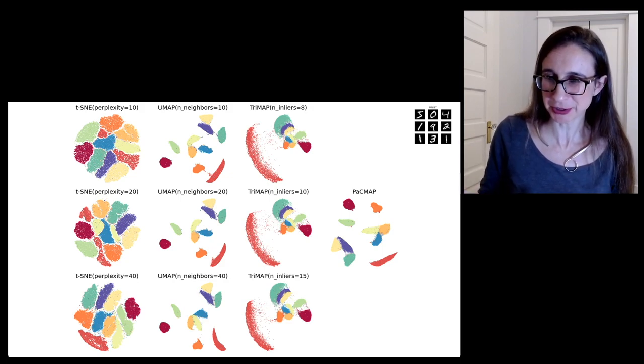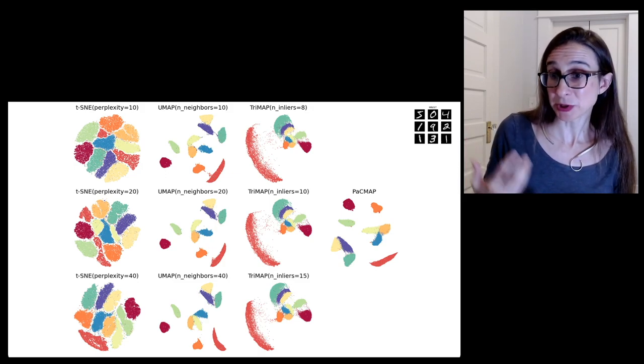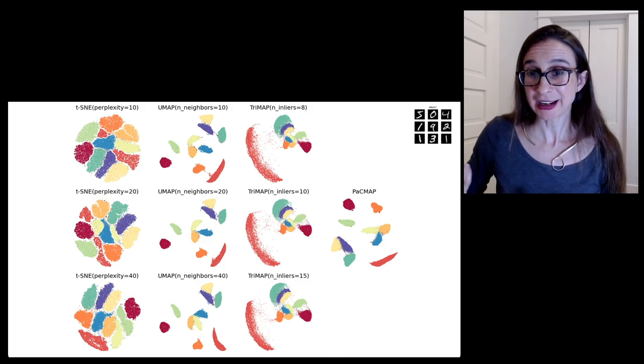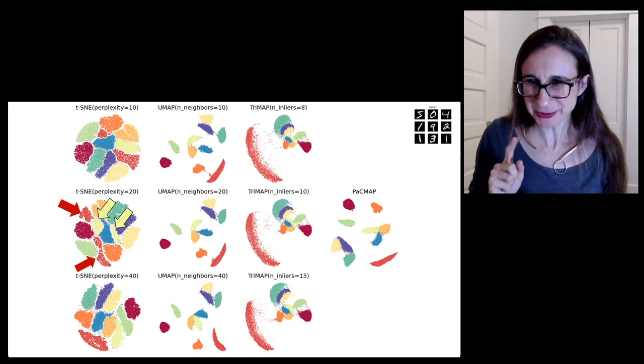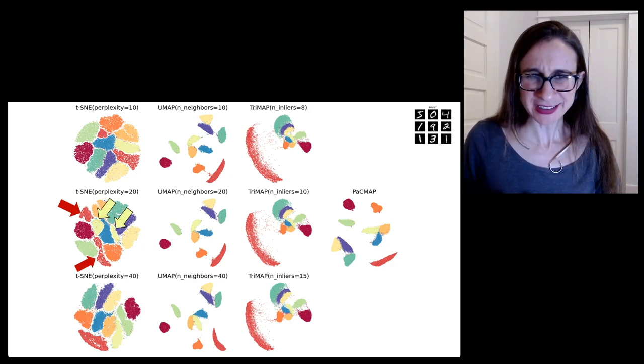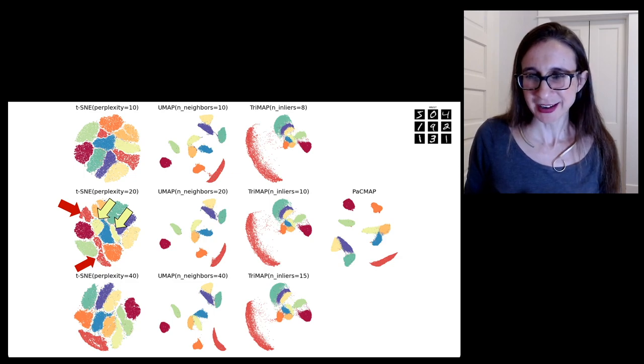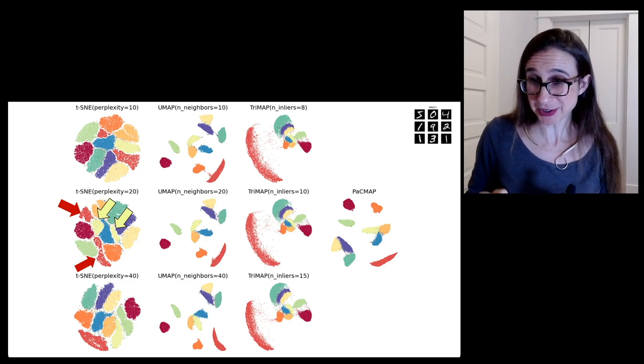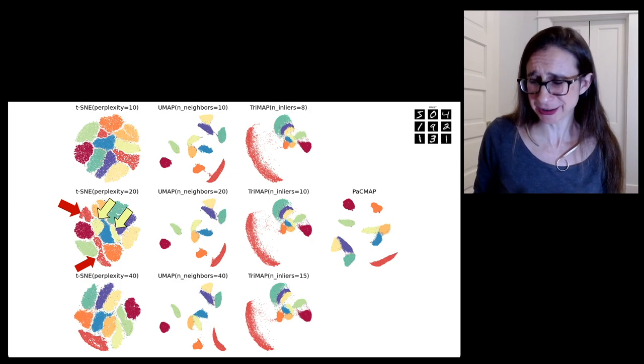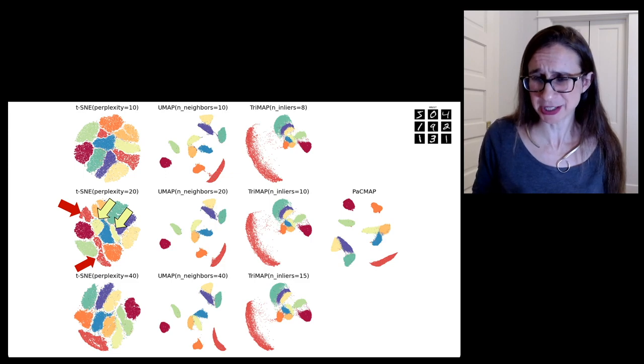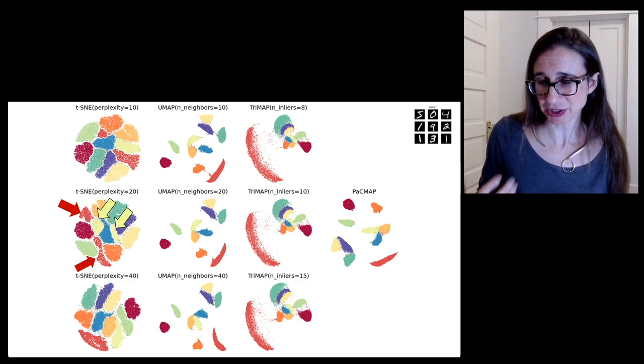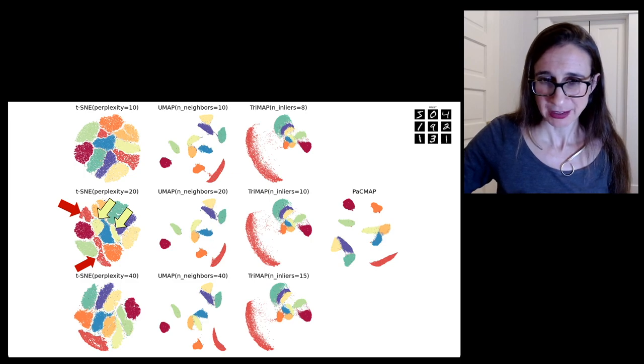PacMap also does a job that's similar to UMAP in that it really does a nice job on capturing the local structure where the local structure is important. We found this throughout the datasets that we've looked at where PacMap can capture local structure when local structure is important, and it can capture global structure when global structure is important. I forgot to mention one thing. t-SNE here split multiple clusters into two clusters. So there were two handwritten digits that actually got split apart when we did t-SNE, which is really bad. That shows that global structure has not been preserved.